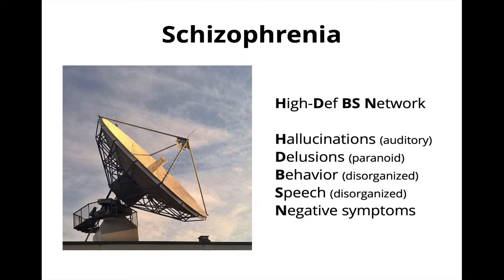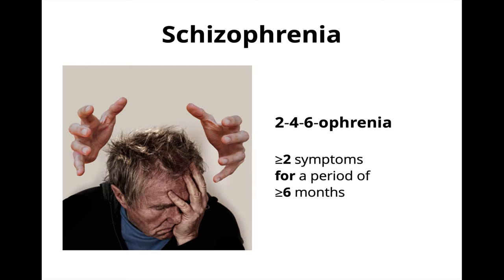For schizophrenia, the mnemonic is to think of this disorder as like being connected to a high-definition BS network. Recall that auditory hallucinations are commonly associated with schizophrenia. These voices are incredibly clear and sound like real voices to the patient — very high-definition — but they're not real, so it's as if there are radio waves spreading fake BS via a network. High-def BS network will help you remember the hallucinations, delusions, disorganized behavior, disorganized speech, and negative symptoms that are the five core signs and symptoms of schizophrenia. Think of this disorder as 2-4-6-sphrenia: you need at least two of these symptoms for a period of at least six months to qualify.